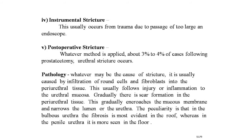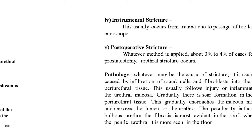Instrumental stricture usually occurs from trauma due to passage of too large an endoscope. Post-operative stricture: about 3 to 4 percent of cases following prostatectomy develop urethral strictures. Pathology: whatever the cause, stricture is usually caused by infiltration of round cells and fibroblasts into the periurethral tissue following injury or inflammation to the urethral mucosa. Gradually scar formation in the periurethral tissues narrows the lumen of the urethra. In the bulbous urethra, fibrosis is most evident in the roof, whereas in the penile urethra it is more seen in the floor.